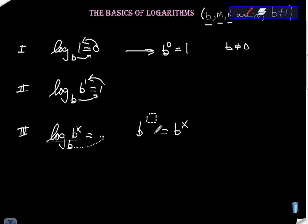B to some power is equal to B to the X. Well, what's missing in this picture? X. So obviously the answer is X.